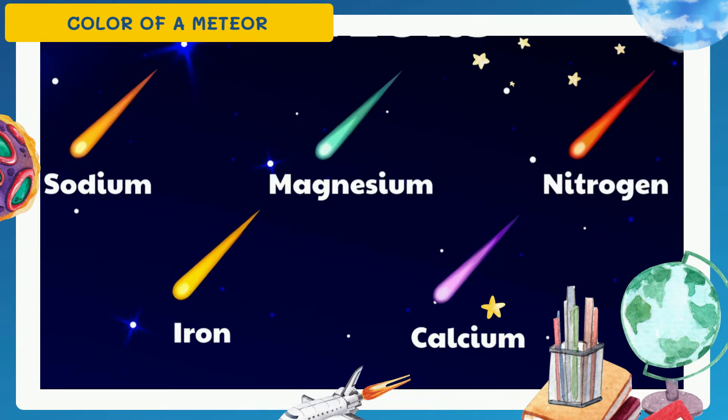The observable light emitted by a meteor may appear in various colors depending on the chemical composition of the meteoroid and the speed of its movement through the atmosphere. Colors of meteors depend on the metallic content of the meteoroid and the superheated air plasma its track produces. Orange-yellow meteors contain sodium; yellow contains iron; blue-green contains magnesium; violet contains calcium; and red indicates atmospheric nitrogen and oxygen.